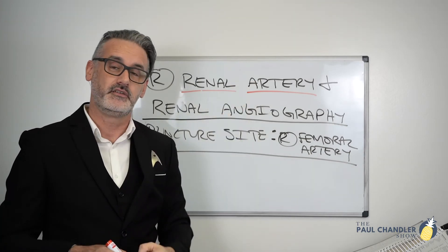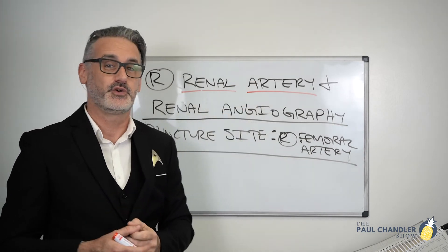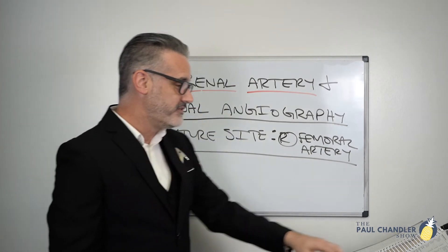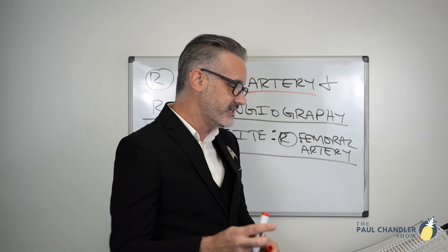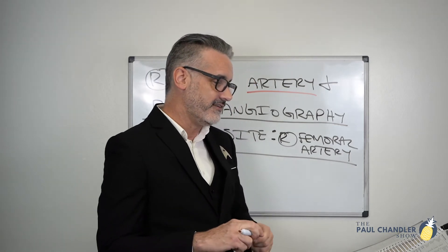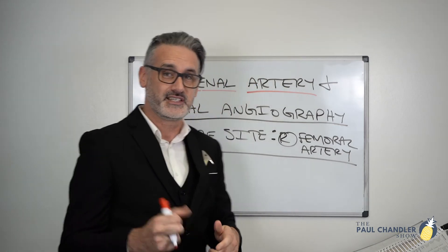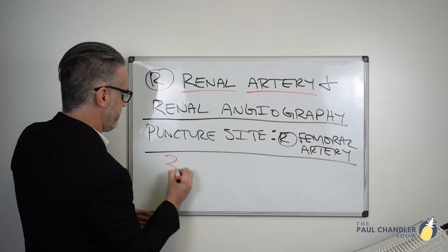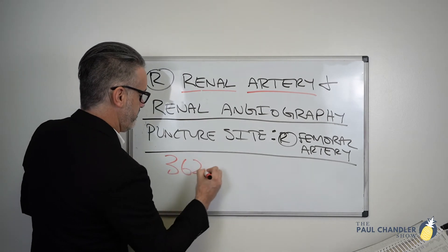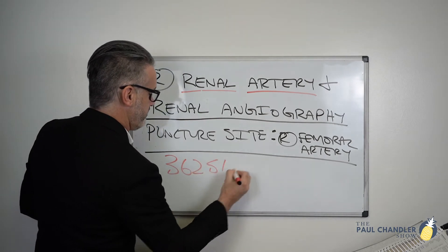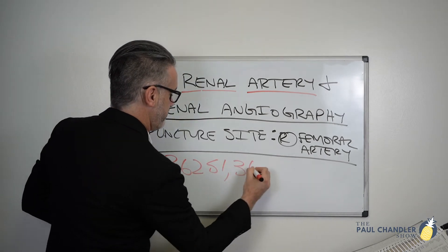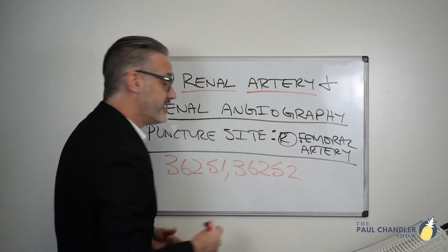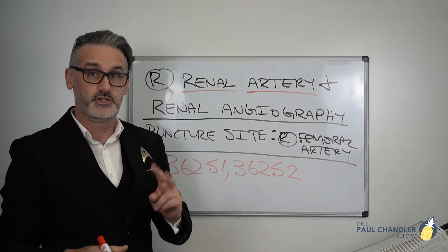Looking in the back of the CPT book under selective catheterization, then arterial, then first order, we see renal listed with two codes: 36251 and 36252. So we're down to just two codes at this point.